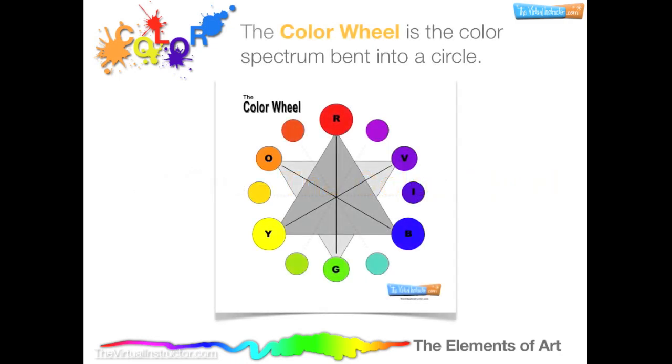The color wheel is the color spectrum bent into a circle. The acronym ROYGBIV represents the colors in the color spectrum: red, orange, yellow, green, blue, indigo, and violet.